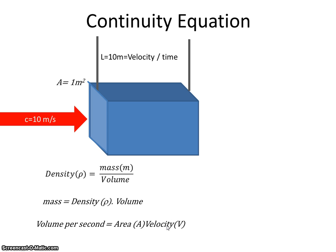So therefore I can say the mass of air per second, so the mass per second, is the density multiplied by the area multiplied by velocity.